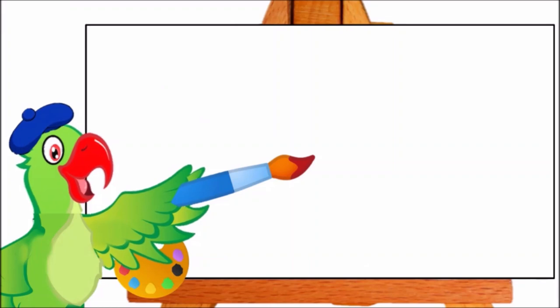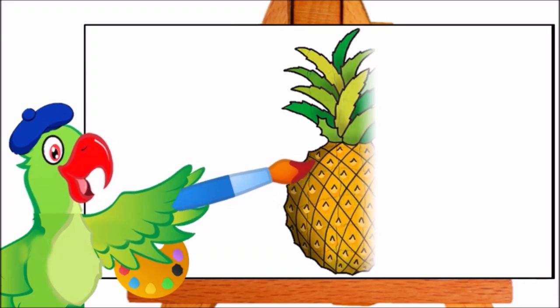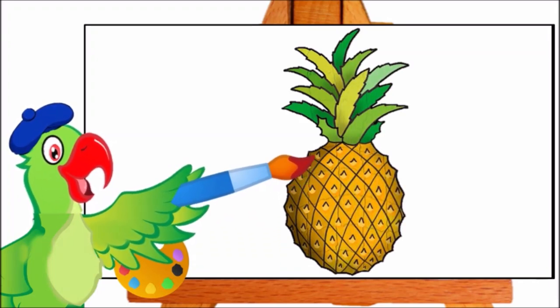Now I am going to paint something else. Can you tell me children, what is this? Very good. It is a pineapple. P-per pineapple.